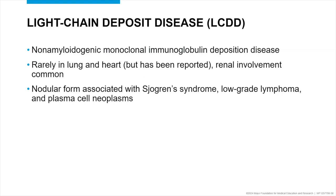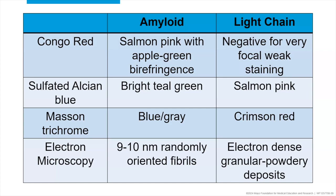Light chain deposition disease is not amyloid — it's a monoclonal immunoglobulin deposition disease. You can rarely see it in the lung and heart, but it has been reported. Renal involvement tends to be more common. The nodular form is associated with Sjögren's, low grade lymphoma, and plasma cell neoplasms. Light chain deposition disease is often missed — at least once every couple of months we get a consult case where they're lost because the Congo red is negative. Every pathology lab has trichrome, so with a Congo red and a trichrome you can pretty reliably say if something is going to be light chain deposition disease or not.